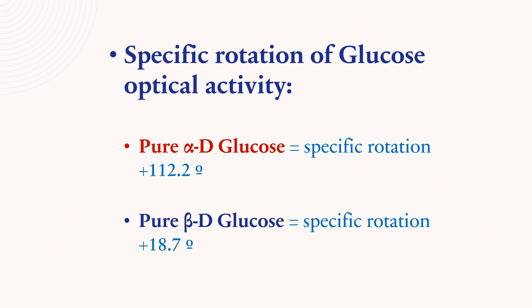Specific rotation of glucose and optical activity. Pure alpha D-glucose has a specific rotation of +112.2 degrees and pure beta D-glucose has a specific rotation of +18.7 degrees.